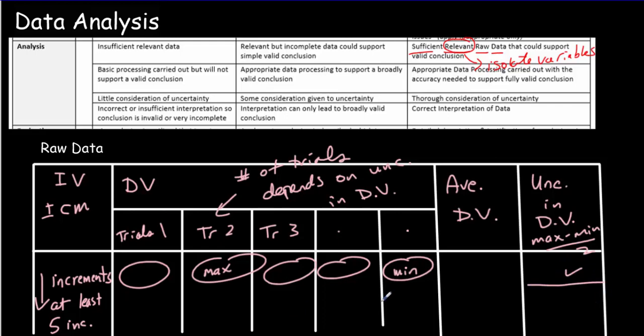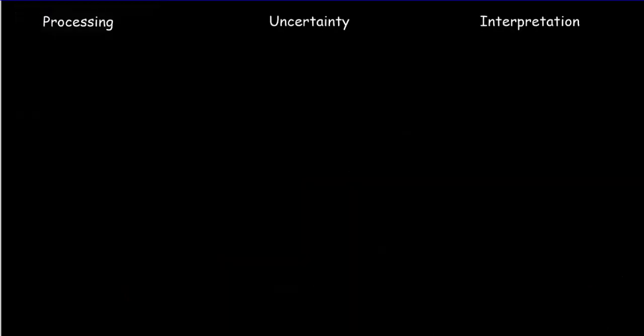Something to watch out for in terms of having sufficient data: you might have some data that looks like a straight line, but you didn't get any data closer to the origin, and what was actually happening was more like a square root curve. So you want to address that idea of getting sufficient data in key regions.